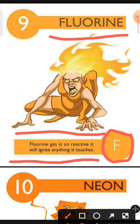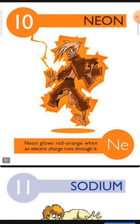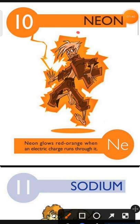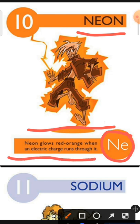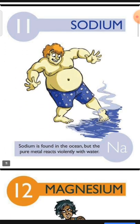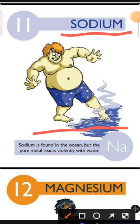Element number 10 is Neon. The characteristic of Neon is: Neon glows red-orange when an electric charge runs through it. Element number 11 is Sodium. The characteristic of Sodium is: Sodium is found in the ocean but the pure metal reacts violently with water.